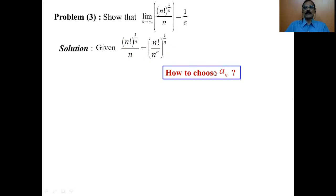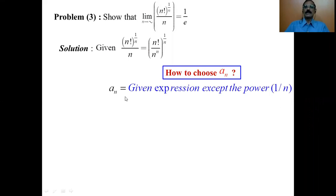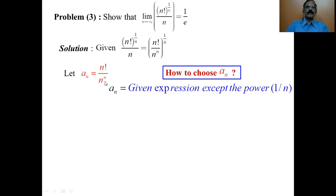To choose a_n, we take the given expression except the power 1/n. Therefore a_n is chosen as the expression inside, ignoring the power 1/n. Thus a_n equals n factorial divided by n to the power n.